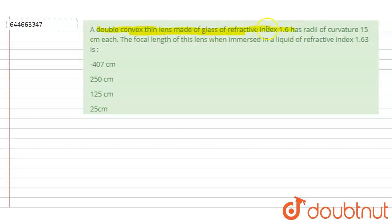Hello everyone. A double convex thin lens made of glass of refractive index 1.6 and radius of curvature 15 centimeter each. The focal length of this lens when immersed in a liquid of refractive index 1.63 is...